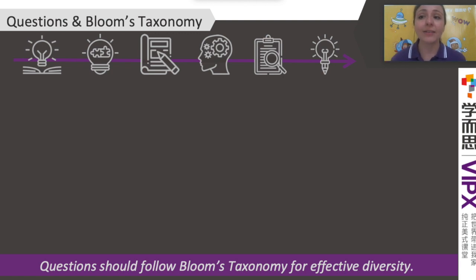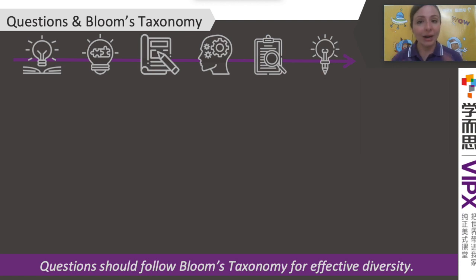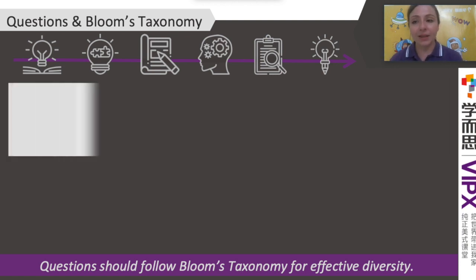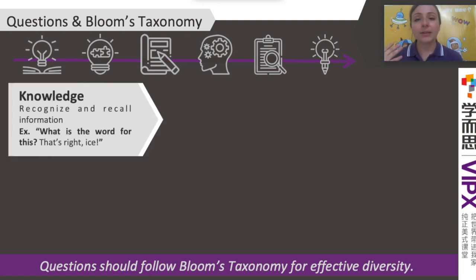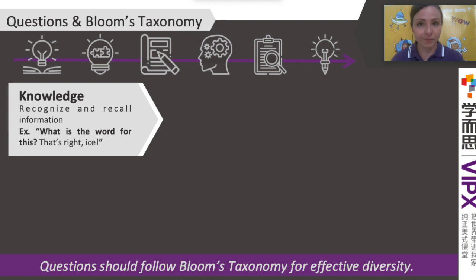As promised, here is questions and Bloom's taxonomy. We're going to be working through one at a time. Number one — if you remember the bottom of our cake, it is knowledge. That is recognizing and recalling information.